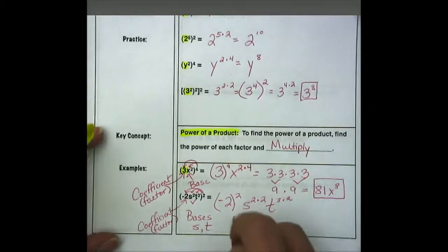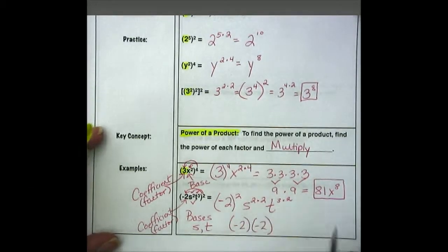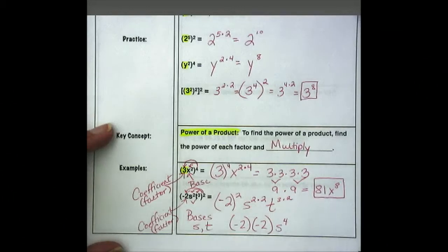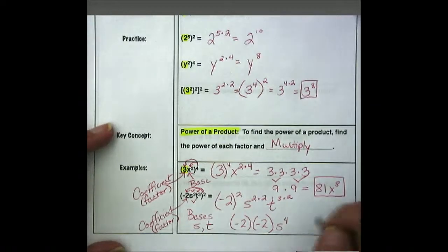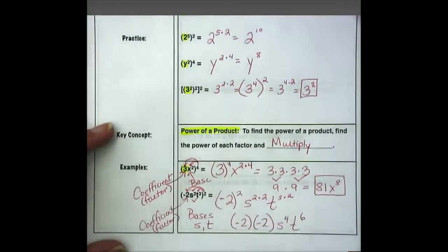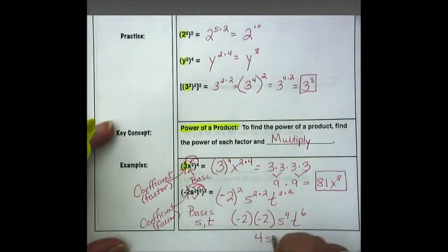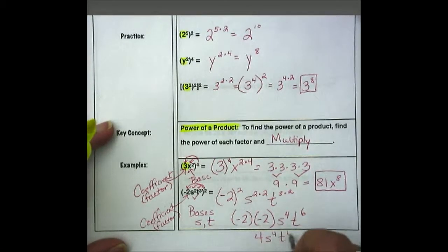So negative 2 to the 2nd is negative 2 times negative 2. s to the 4th is 2 times 2 is 4. t to the 3 times 2, so t to the 6th. Negative 2 times negative 2 is 4, so we get 4s to the 4th, t to the 6th.